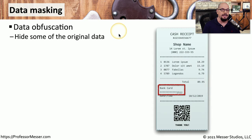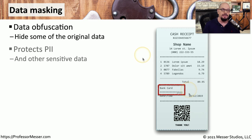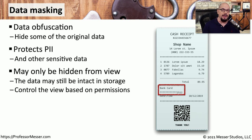One way to protect data is to simply not display it. This is called data masking, and it's a way to obfuscate data that shows the data exists but doesn't allow you to see any of it. This can protect your personally identifiable information, your financial details, or anything else that might be sensitive. The information may exist in its complete form inside the database, but only part of that data is displayed on screen or on paper, and what's displayed is controlled by the permissions of the person using that application.